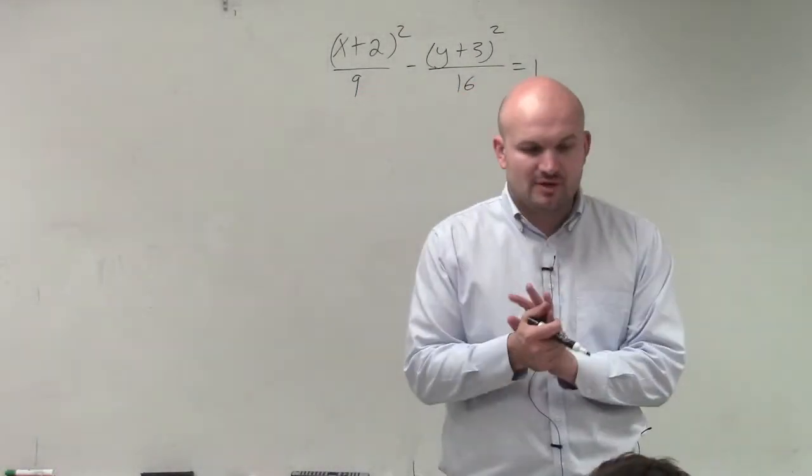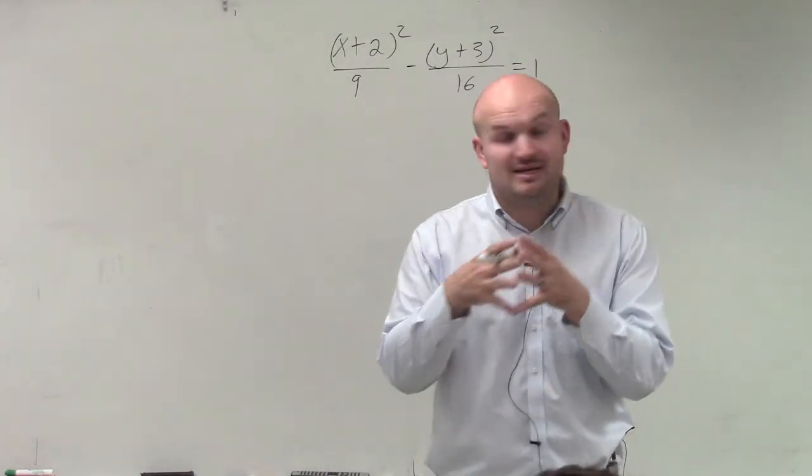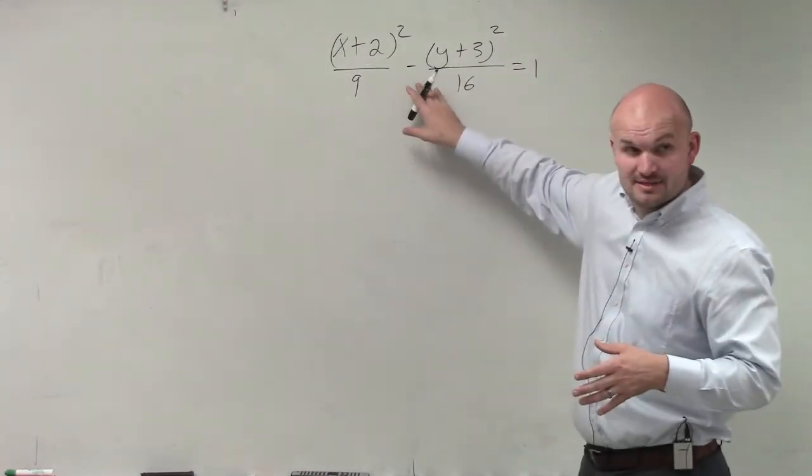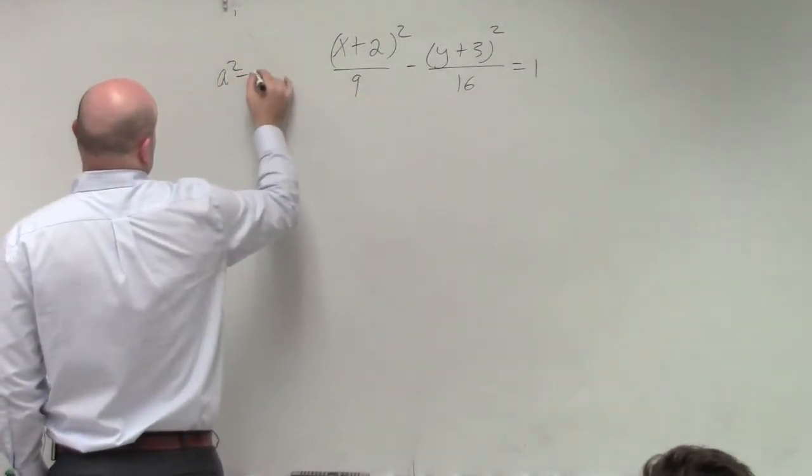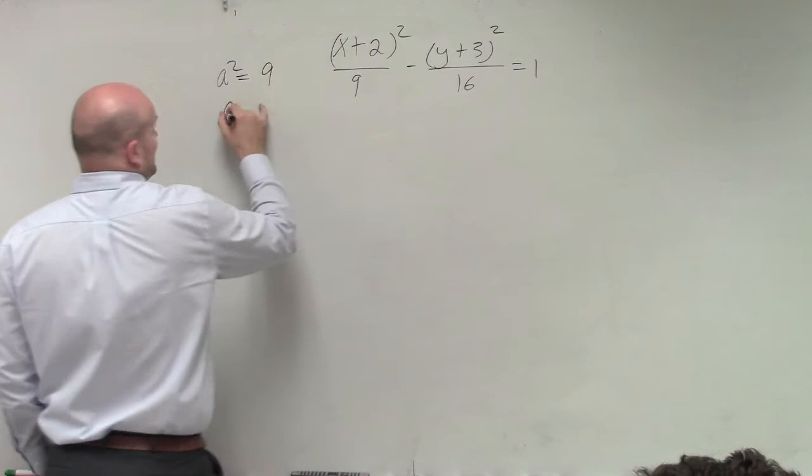So again, first thing we want to do is identify our a². Now again, I notice that this is an ellipse minus. So therefore, I know my 9 is my a². So I'll say a² equals 9, so a equals 3.